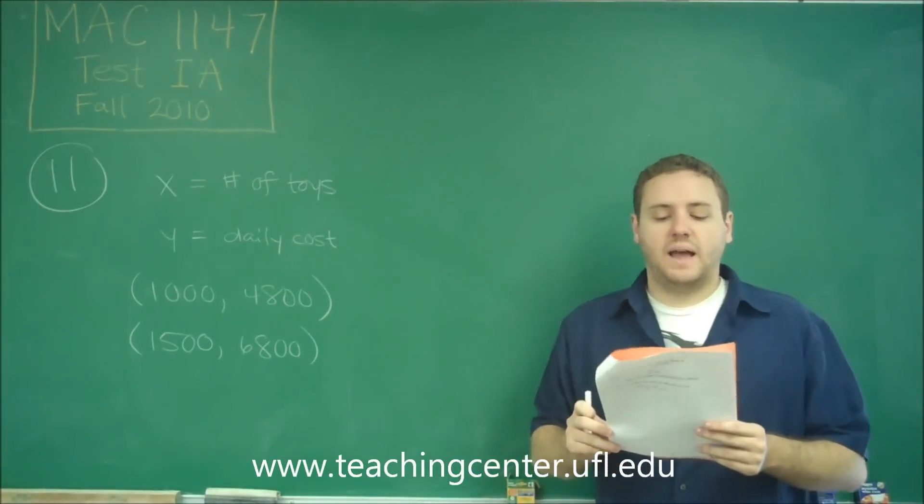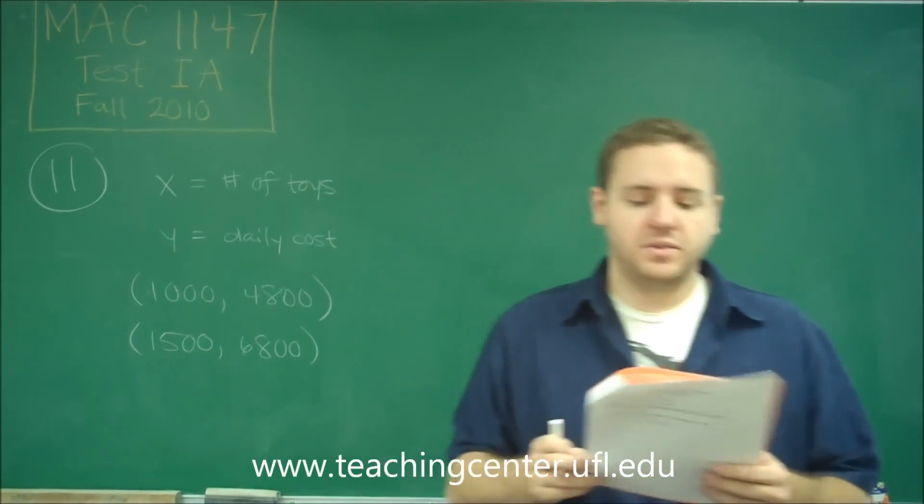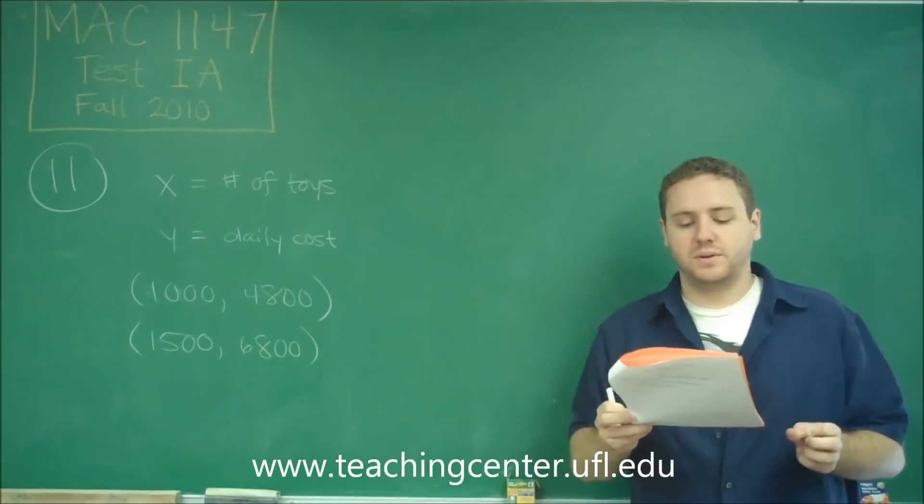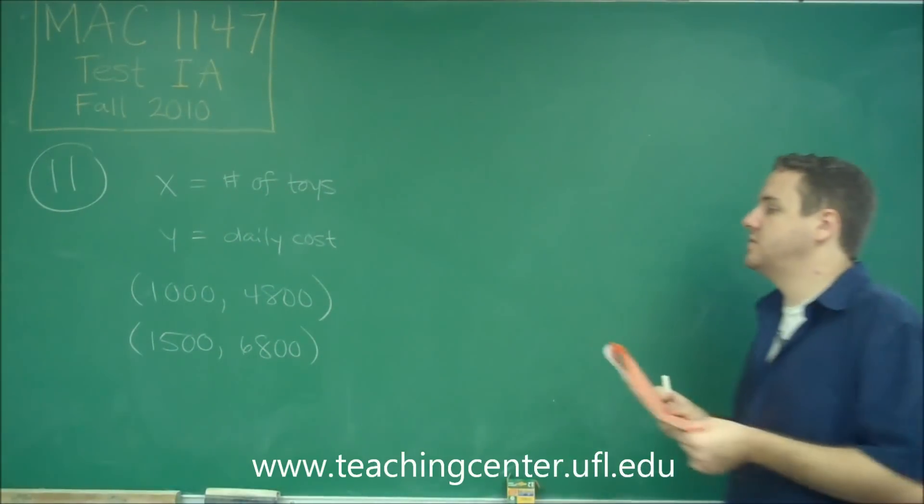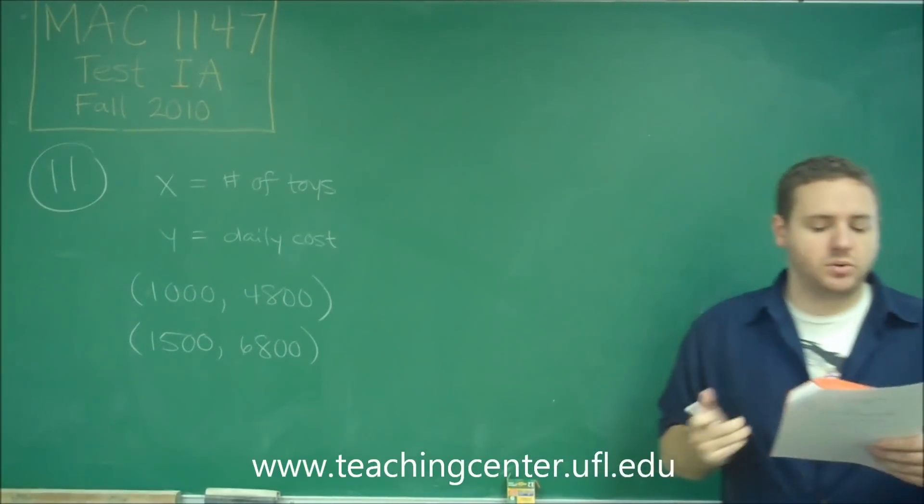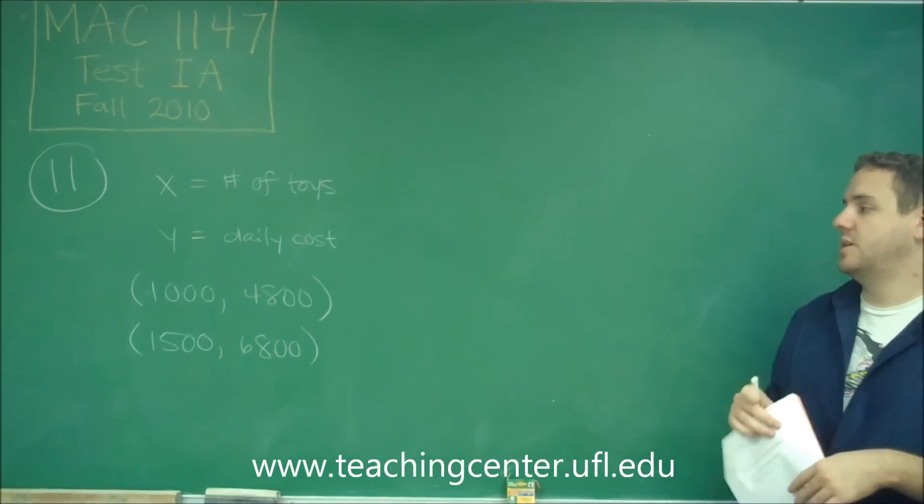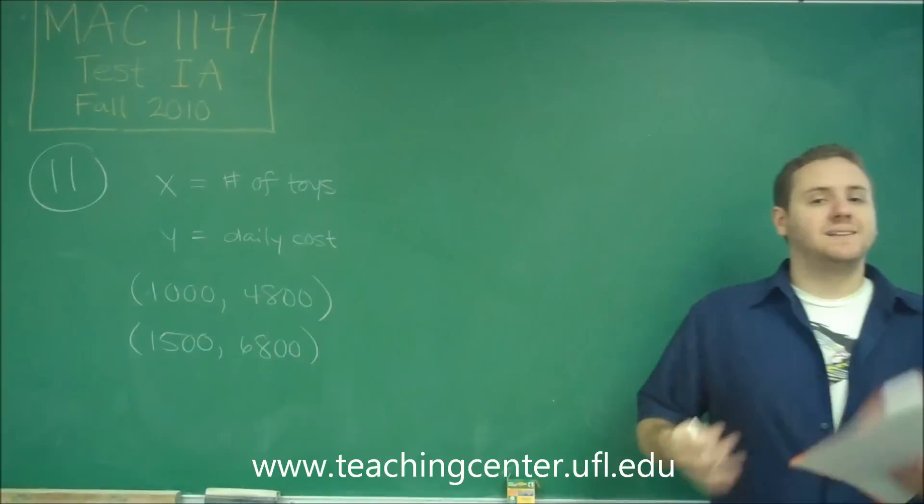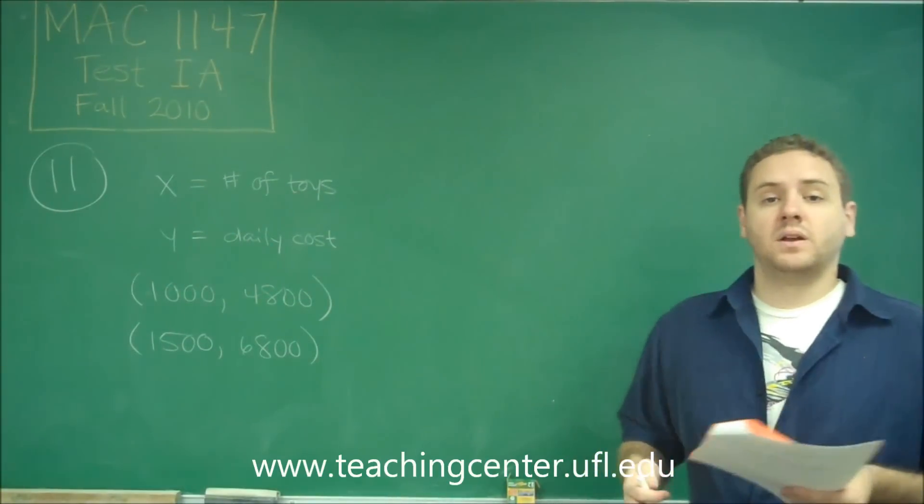So we're asked to find the daily fixed cost, and the total cost to produce 500 toys in one day. So what we need to do is come up with our equation from these two points, and since we were told that this is a linear relationship, these two points lie on a line, let's just find the equation of the line.